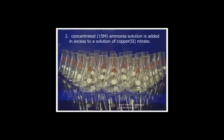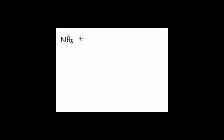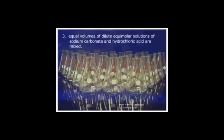Problem two: concentrated ammonia is added to a solution of copper(II) nitrate. Copper two is a transition metal and ammonia is a ligand — so this is a coordination compound. Dissociate copper nitrate: Cu²⁺ plus NO₃⁻. Nitrate is a spectator ninety-nine times out of a hundred. Copper has a charge of plus two, so it bonds to four ammonias, giving Cu(NH₃)₄²⁺. Ammonia has no charge, so the overall charge stays at plus two.